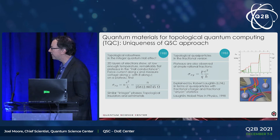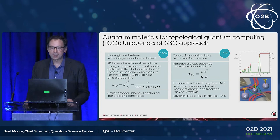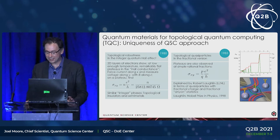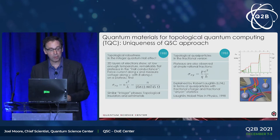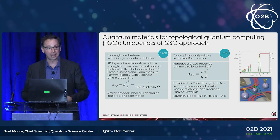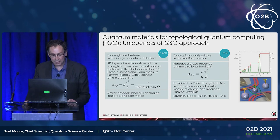In quantum computing, error correction has a threshold — if you have fewer errors than the threshold, you can correct them. But correcting them takes a lot of qubits, and the threshold is fairly stringent. As a way of hedging your bets, there are a few phenomena in physics that are incredibly robust. One of them — recently used to redefine the volt because it's so robust — is the quantum Hall effect: in two-dimensional materials, going back to 1980, you can measure a conductance precise to about one part in a billion, even with defects in the material.